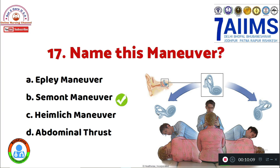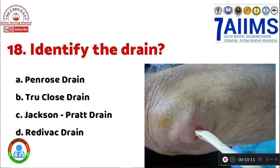Question 18: Identify the drain. Option A: Penrose drain. Option B: true closed drain. Option C: Jackson-Pratt drain. Option D: redivac drain. This drain is called the Penrose drain, Option A.